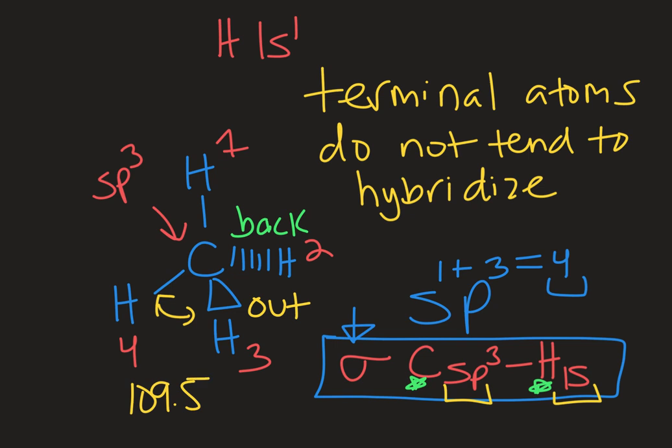That's the furthest away these groups can get with four sigma bonds when you have all bonds to other atoms. And then the shape of this molecule is described as tetrahedral. That is the shape of this non-planar distribution of four groups.